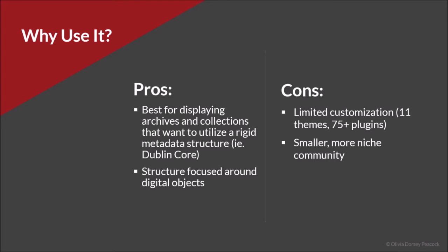It's easier to create exhibitions from those items and focus them around a central theme. If you want to utilize a rigid metadata structure — for example, the Dublin Core, which you may know about if you're an archivist — you may want to use Omeka for that purpose as well. Some cons of Omeka include limited customization. They do have 11 themes and over 75 plugins, but if you truly want a customized archive, you'll have to do some coding.